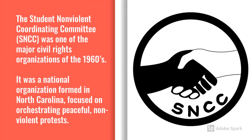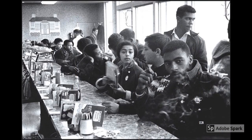The Student Nonviolent Coordinating Committee, SNCC, was one of the major civil rights organizations of the 1960s. It was a national organization formed in North Carolina, focused on orchestrating peaceful, nonviolent protests. The group, made up of high school and college-age students, became known for sit-ins, freedom rides, and the Freedom Summer in Mississippi. In Georgia, the group began its focus on the cities of Albany and Atlanta.